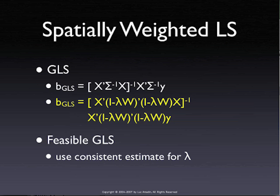In the generalized moments approach, you set up moment conditions and equations, solve for those, find a consistent estimate for lambda, plug it in, and you're done. In maximum likelihood, we write out the likelihood for everything and maximize for both lambda and beta all at the same time — it's all estimated jointly. That's the difference between the two approaches.